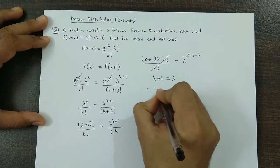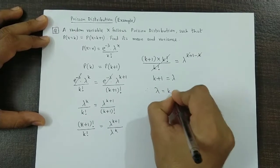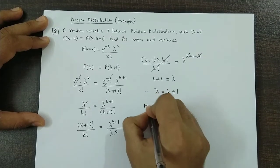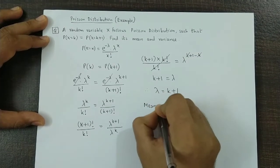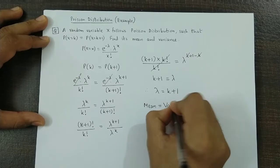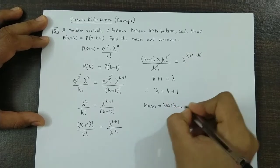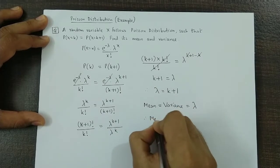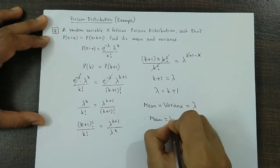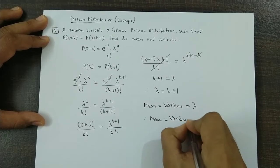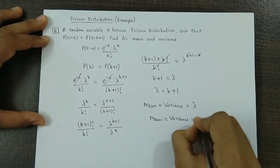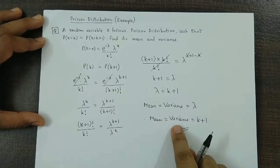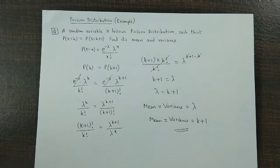Therefore the value of lambda is k plus 1. We have to obtain the mean and variance. Now we know that for Poisson's distribution, mean is equal to variance and both are equal to lambda. So therefore mean is equal to variance, and both these values are k plus 1. Mean is k plus 1 and variance is also k plus 1.